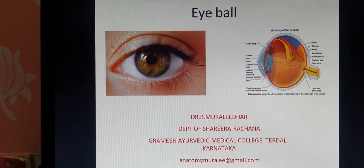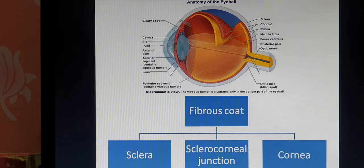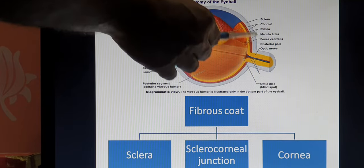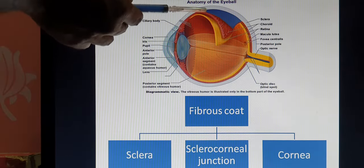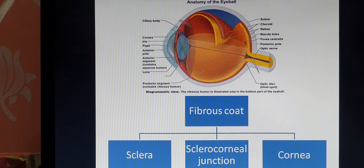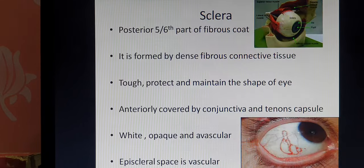I am Dr. Moolaydar Vadigar, Department of Shairachana, Graminayath Medical College, Theradal, Karnataka. The first layer is known as the fibrous coat or outermost coat, and it is further divided into three parts. The posterior white part is known as the sclera, and the anterior bulged part is known as the cornea. Where the sclera and cornea join, that is called the sclerocorneal junction. So, the first layer is further divided into sclera, sclerocorneal junction, and the cornea.